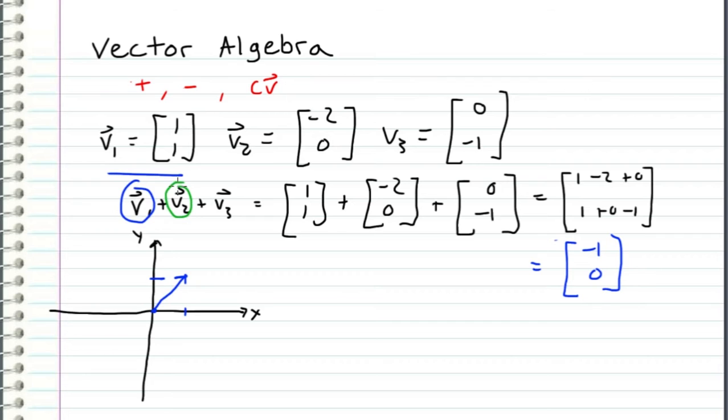And now we add V2 to this. And when we add a vector, we start where we left off, which is right here at point (1, 1). And then we add the components of the next vector. So in this case, V2 goes -2 in the x direction and 0 in the y direction. So V2 will bring us over here to (-1, 1). So here we have V2, and here we have V1.